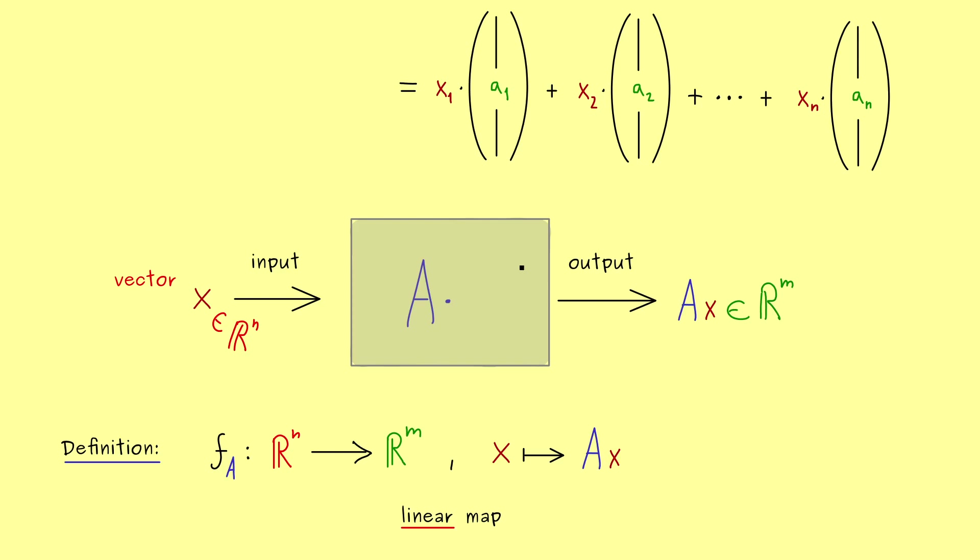Ok, so here we had the column picture for the matrix vector product. And in the next video, we will look at the row picture. So, I really hope that we meet there. And have a nice day. Bye.